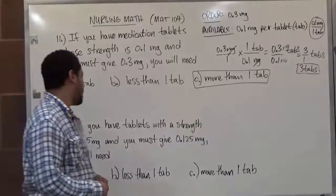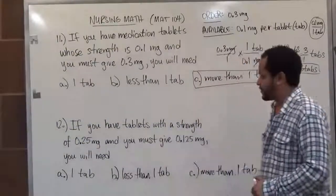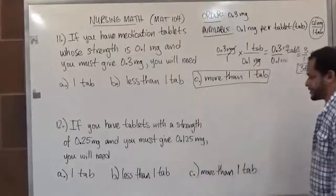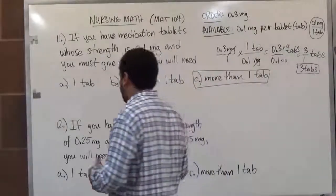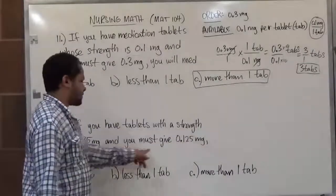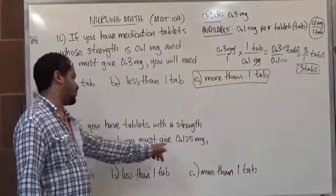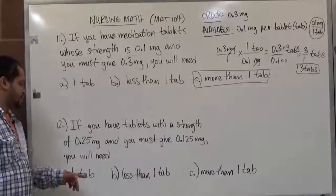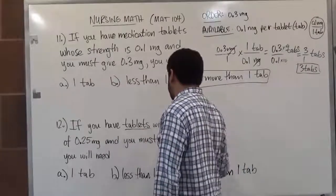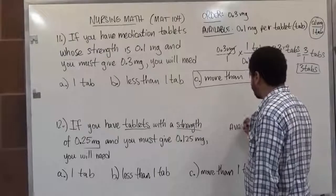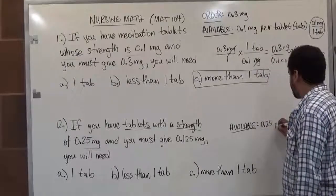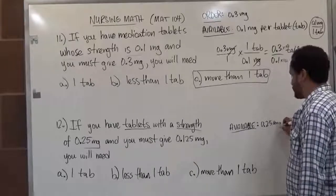Now for number 12: if you have tablets with a strength of 0.25 mg and you must give 0.125 mg, you will need A) one tab, B) less than one tab, or C) more than one tab. We can already see that 0.25 mg is the tablet strength and we need to give 0.125, which is smaller than 0.25 — so we can already hint that it's going to be less than a tablet. But let's put it into proper form: we have available 0.25 mg per tab.